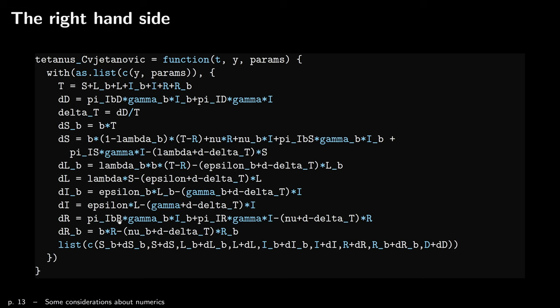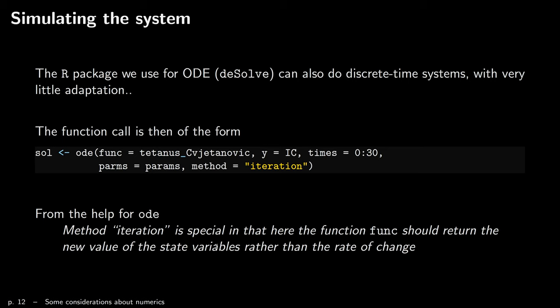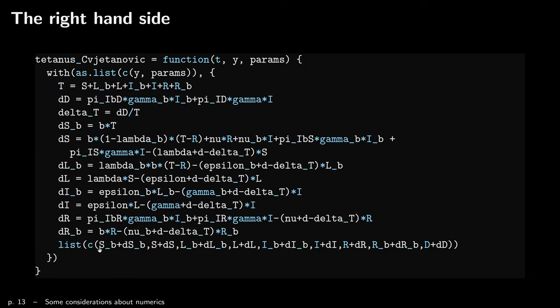You write exactly like you would an ODE. The only thing to remember is that you have to return the new value of the state variables, which means the new value is the old value coming in as y, plus the change. If the change is negative, it will decrease; if positive, it will increase. So every time I've added s plus the variation, lb plus the variation, l plus the variation, and so on. That's the only difference: for a discrete time system using this method, you have to add your variation to the former value of the state.